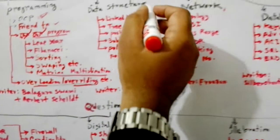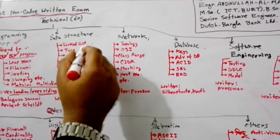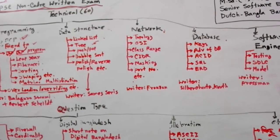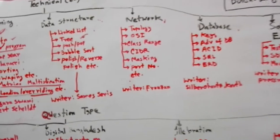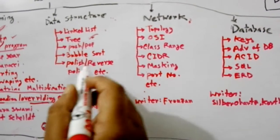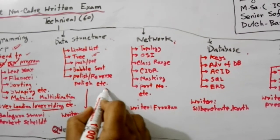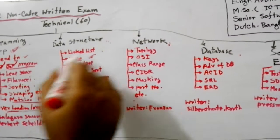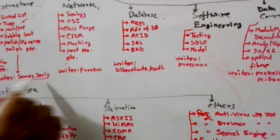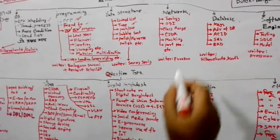The data structure part mainly covers linked lists, trees, binary trees, push and pop operations, bubble sort, postfix and prefix notations, infix, prefix, etc. Data structure can be covered through some series of study.